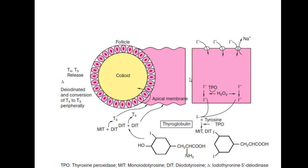This diagram illustrates what is happening in the synthesis, storage, and release. The sodium-iodine symporter is an ATP-dependent process. Then iodination of iodide to iodine occurs, followed by formation of monoiodotyrosine and diiodotyrosine. The key enzyme here is thyroid peroxidase. T3 and T4 are stored bound to thyroglobulin in the form of a colloid in the follicle and are released, deiodinated, and T4 is peripherally converted to T3.